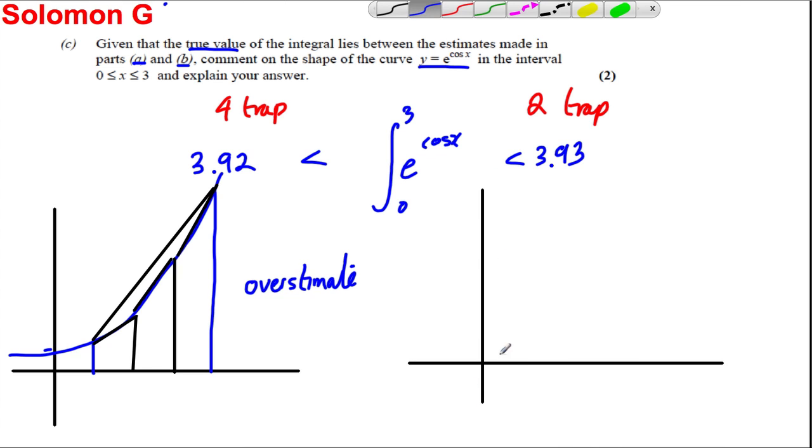But there are curves where your trapezia could be an underestimate. Imagine you had a curve that had a decreasing gradient like as follows, and you're working out the area between here and here. Trapezia now are an underestimate. Even if you use two, they're an underestimate.